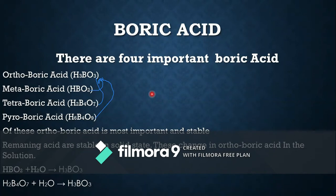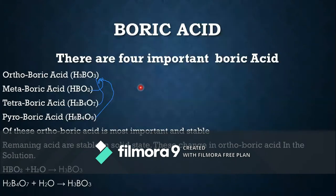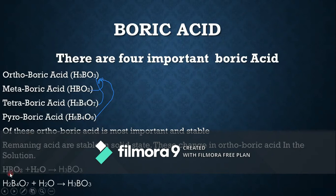The bond between oxygen and hydrogen is weak, so boric acid accepts a pair of electrons from a hydroxyl group — that's why it is called a monobasic acid. When metaboric acid is dissolved in water, it converts into orthoboric acid H₃BO₃.